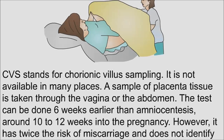CVS stands for chorionic villus sampling; it is not available in many places. A sample of placenta tissue is taken through the vagina or the abdomen. The test can be done six weeks earlier than amniocentesis — around 10 to 12 weeks into the pregnancy — however, it has twice the risk of miscarriage and does not identify as many diseases as amniocentesis.